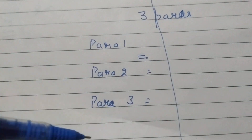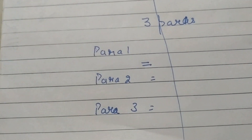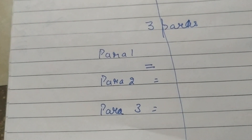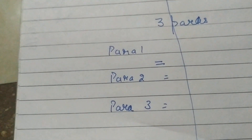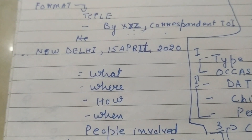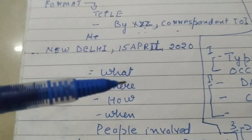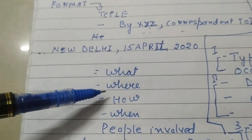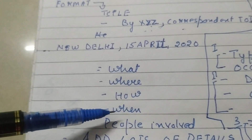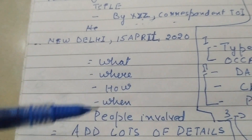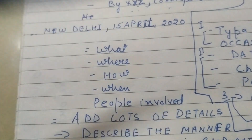The report is further divided into three paragraphs. Be very particular about making paragraphs — it should not be one long paragraph, as that can confuse the checker. The description should be based on these questions: What happened? Where did it happen? How did it happen? When did it happen? And how many people were involved?